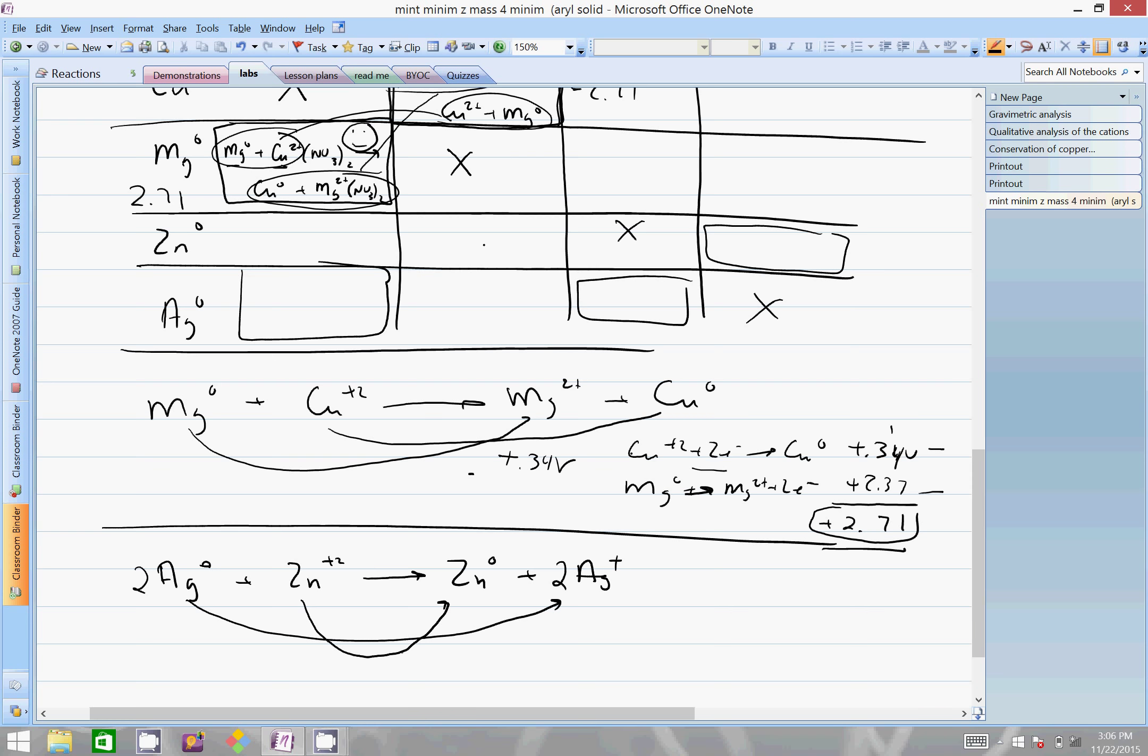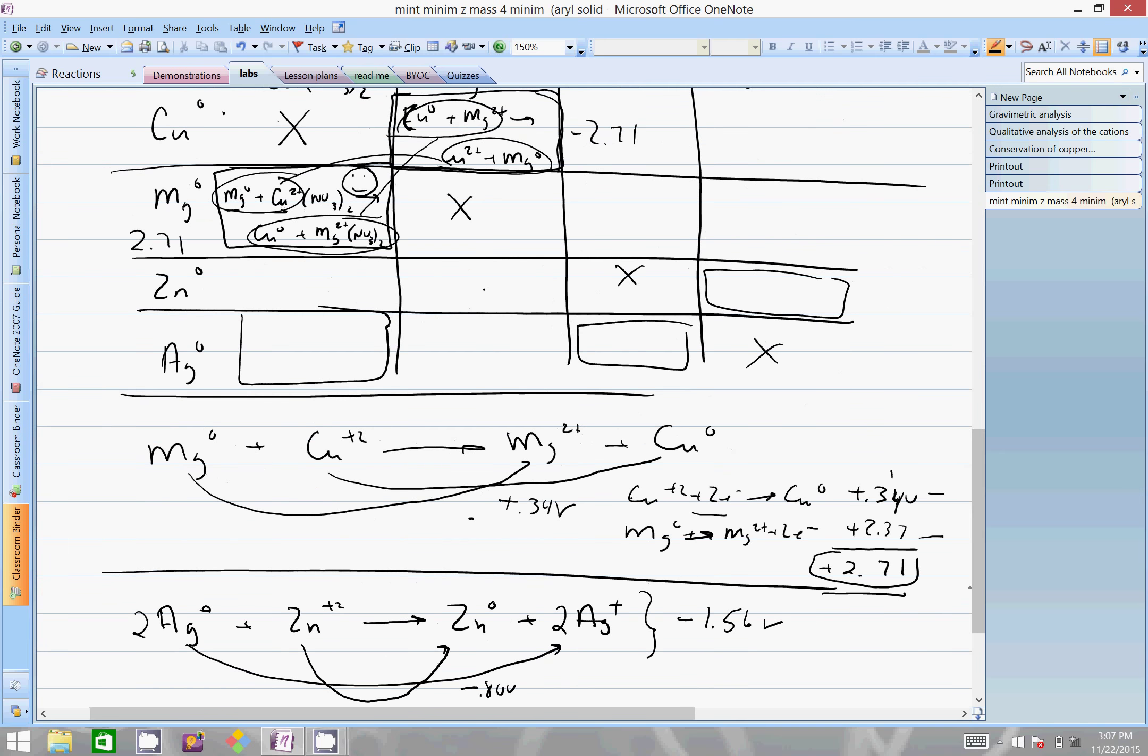Zinc 2+ going to zinc metal will be reduction, and that will be on the chart as is, and therefore its value is a negative 0.76 volts. The silver will be reversed and the silver is going to be positive 0.8, so I flip it to a negative 0.80 volts, giving me a grand total for this reaction of a negative 1.56 volts.